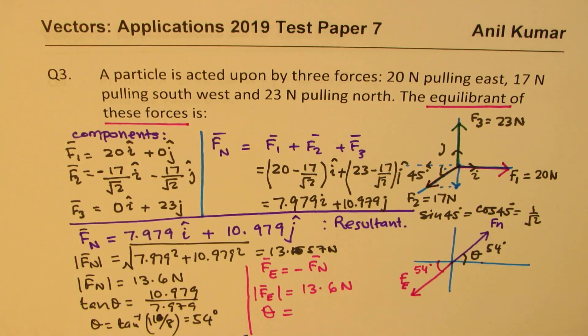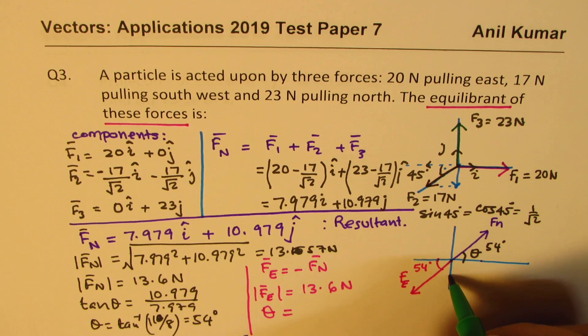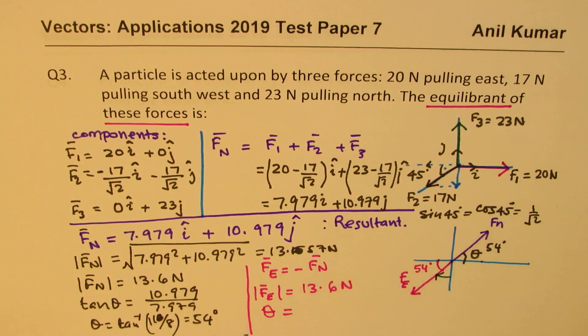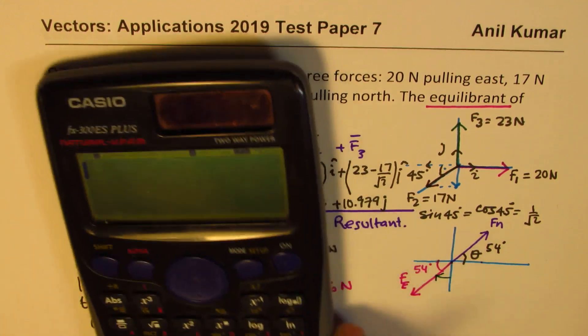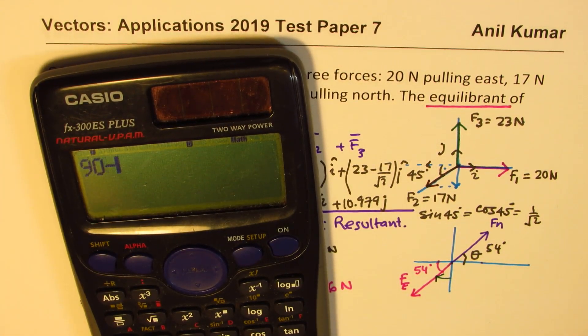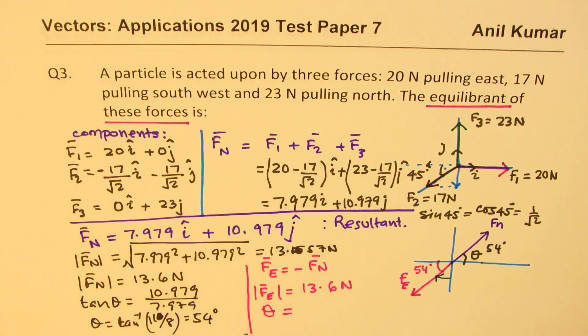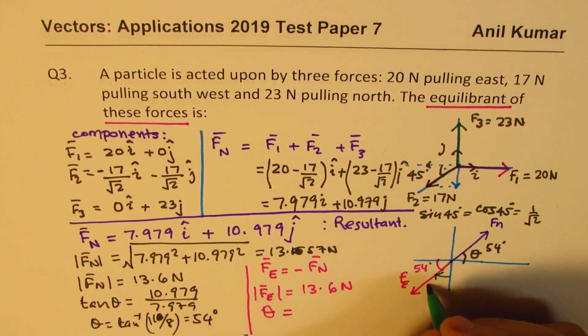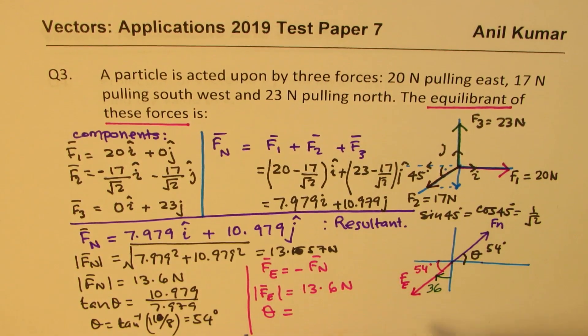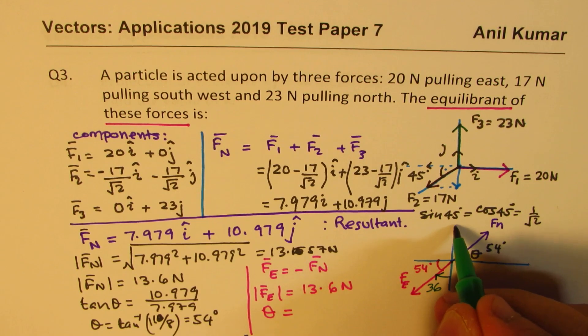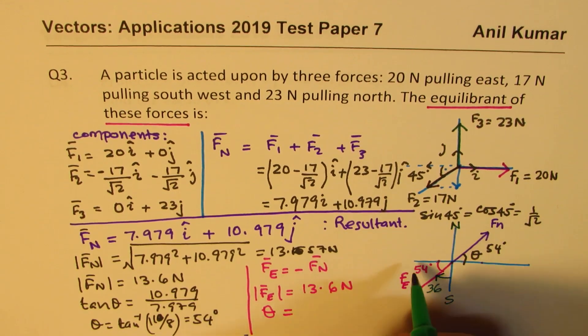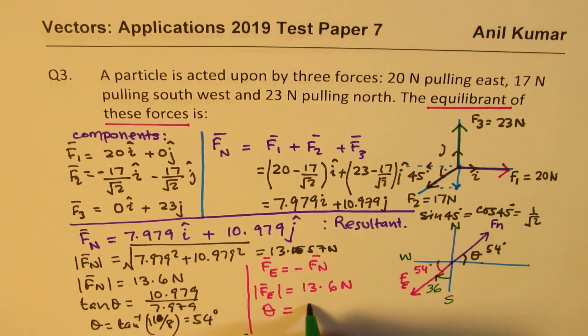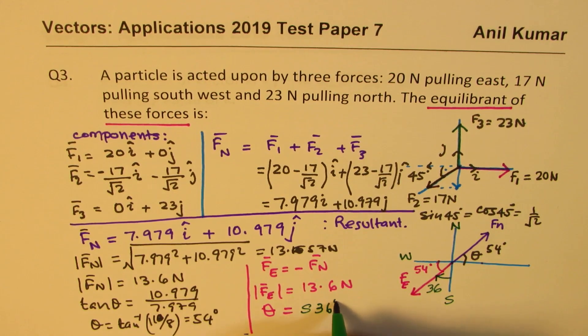But you could also give from south. You could give this angle also. So this much is how much? 90 minus 54. So 90 minus 54 basically is 36. So this angle here is 36. So you could give the angle from south. This is south, this is north. And that is west. So from south, 36 degrees west.